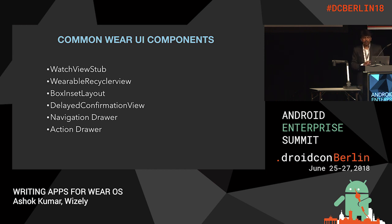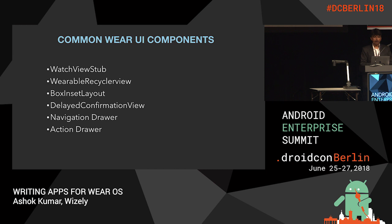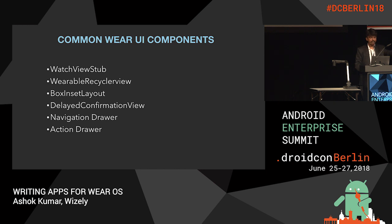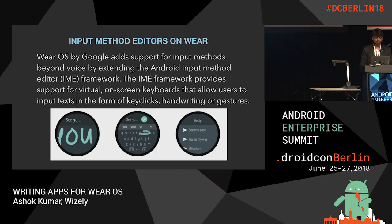The common Wear UI components are: watch view stub, wearable recycler view, box-inset layout, delayed confirmation view, navigation drawer, and action drawer.